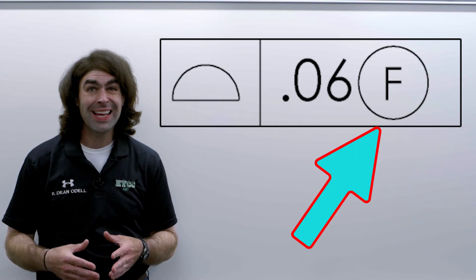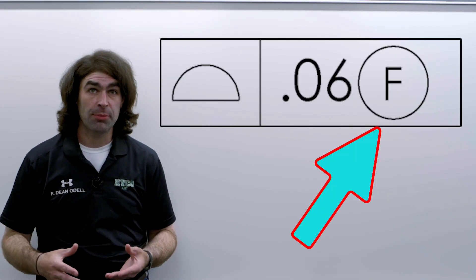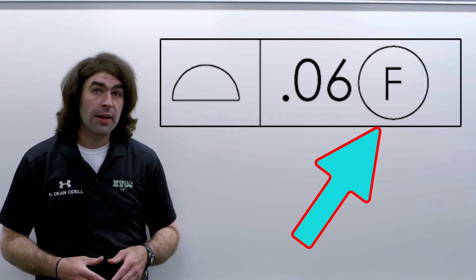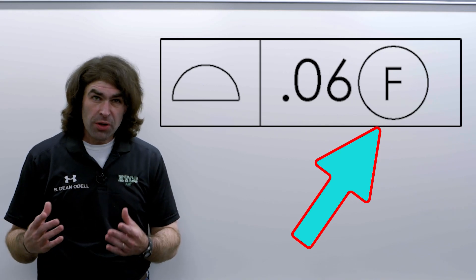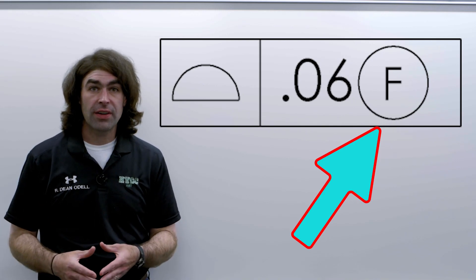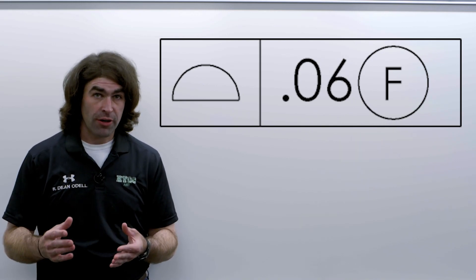In this video, I'm going to talk about the free state symbol in the ASME GD&T standards. You don't see the free state symbol very often, and the reason is, in the ASME system, all parts are inspected in the free state unless otherwise specified.